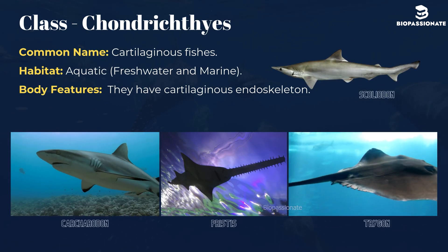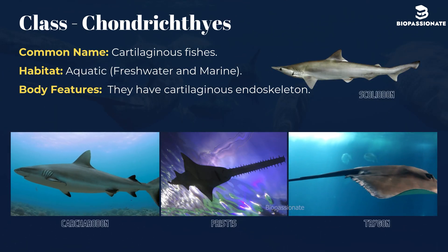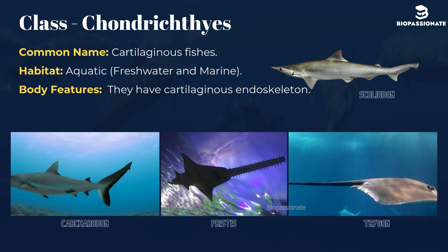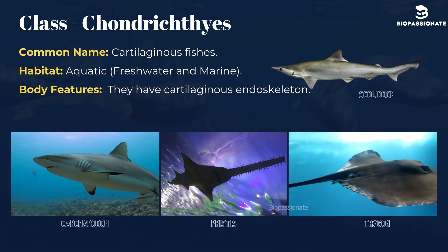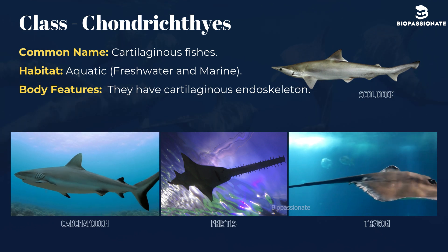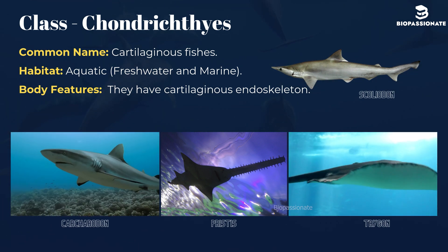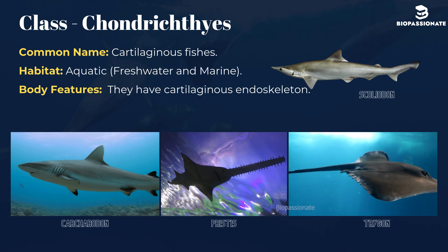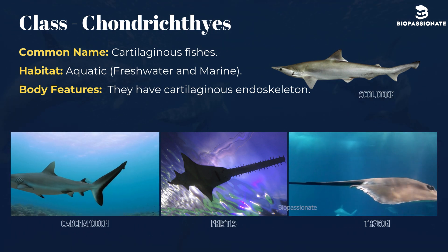Class Chondrichthyes, commonly known as cartilaginous fishes. These are aquatic, freshwater, and marine. They have a cartilaginous endoskeleton. Common examples are Scoliodon (dogfish), Pristis (sawfish), Carcharodon (great white shark), and Trygon (stingray).